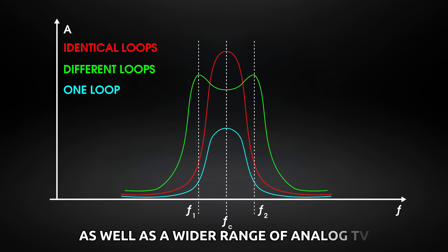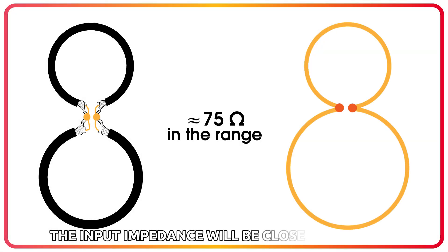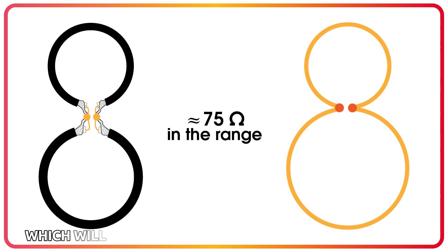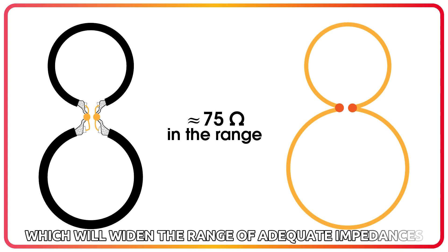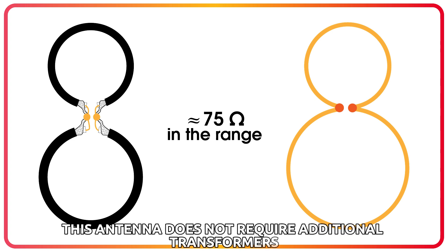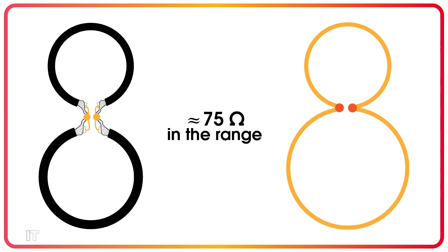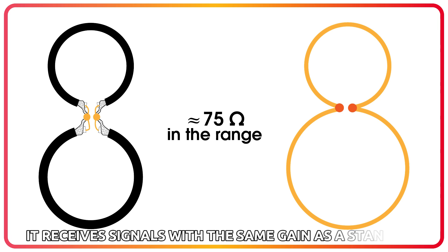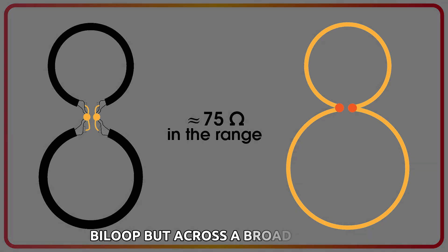It will work for a wider range of analog TV. Moreover, it will improve the antenna's input impedance characteristics. The input impedance will be closer to 75 ohms, which will widen the range of adequate impedances. This antenna does not require additional transformers or matching devices. It receives signals with the same gain as a standard bi-loop but across a broader range.